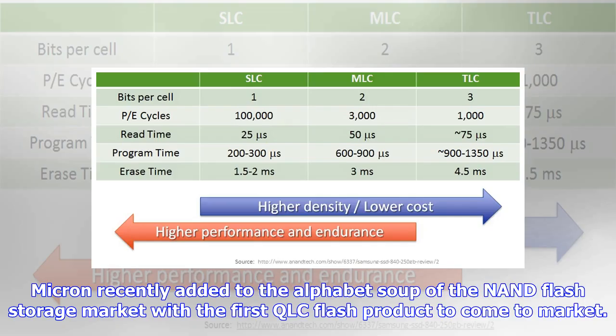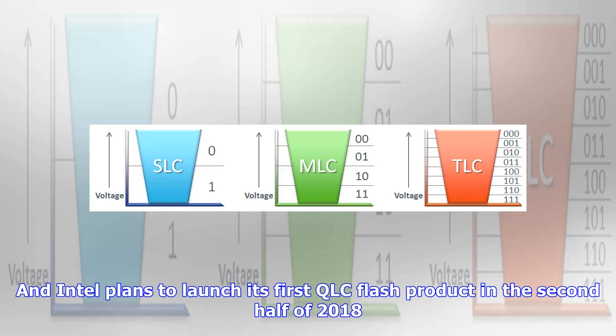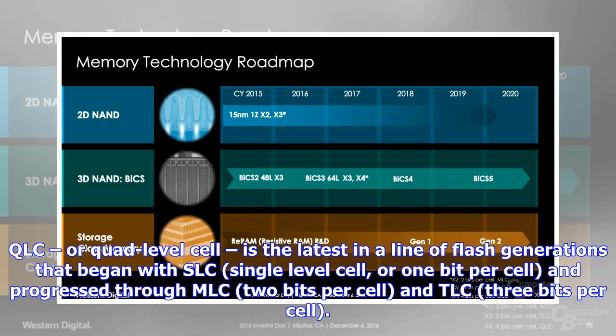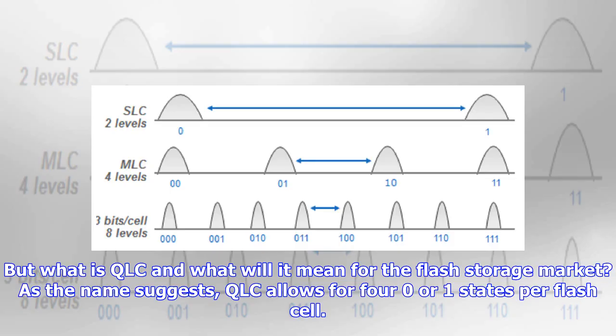Micron recently added to the alphabet soup of the NAND flash storage market with the first QLC flash product to come to market, and Intel plans to launch its first QLC flash product in the second half of 2018. QLC, or quad-level cell, is the latest in a line of flash generations that begin with SLC (single-level cell), one bit per cell, and progress through MLC (two bits per cell) and TLC (three bits per cell).